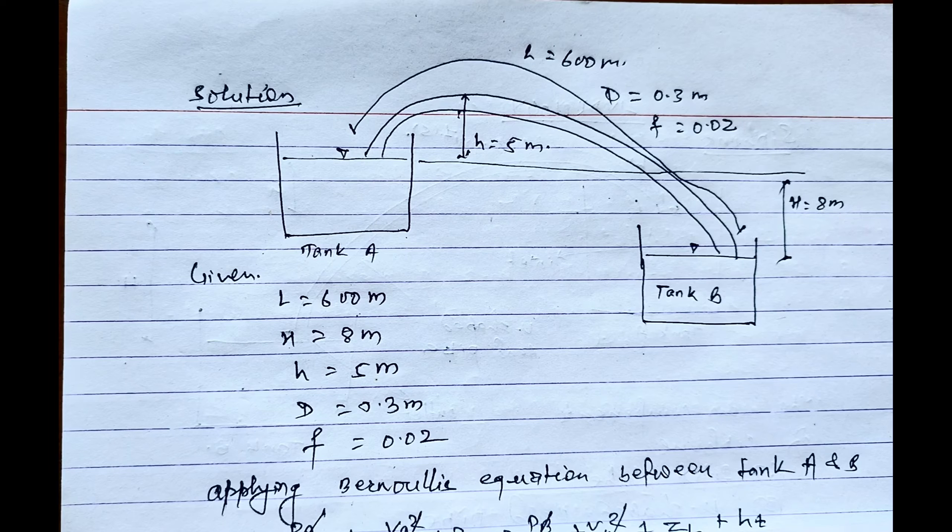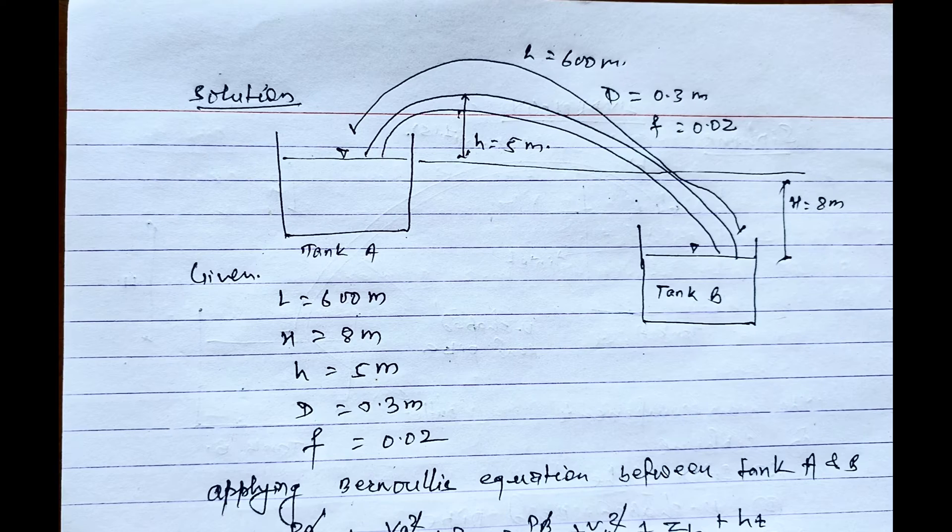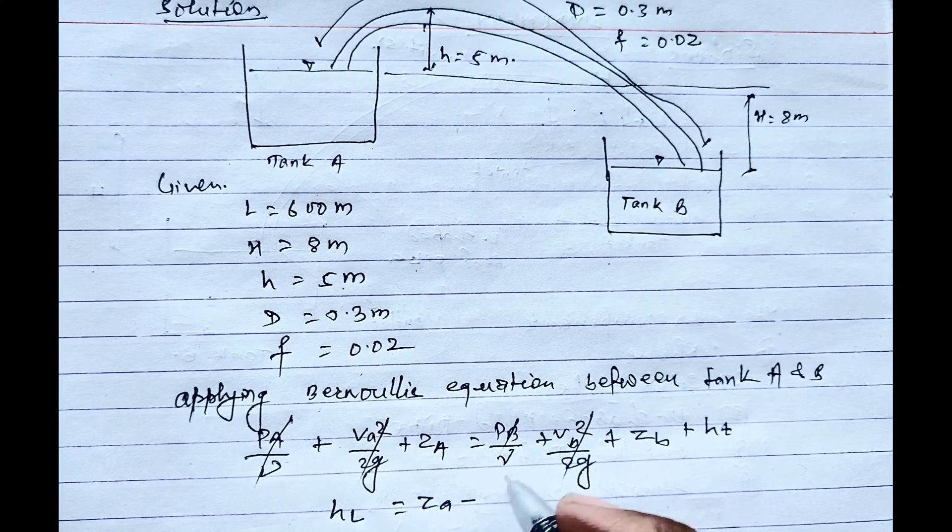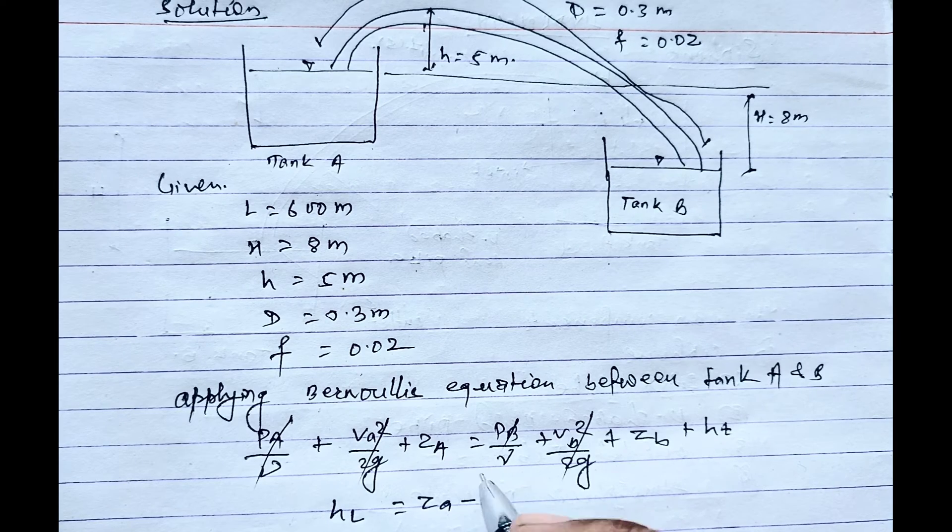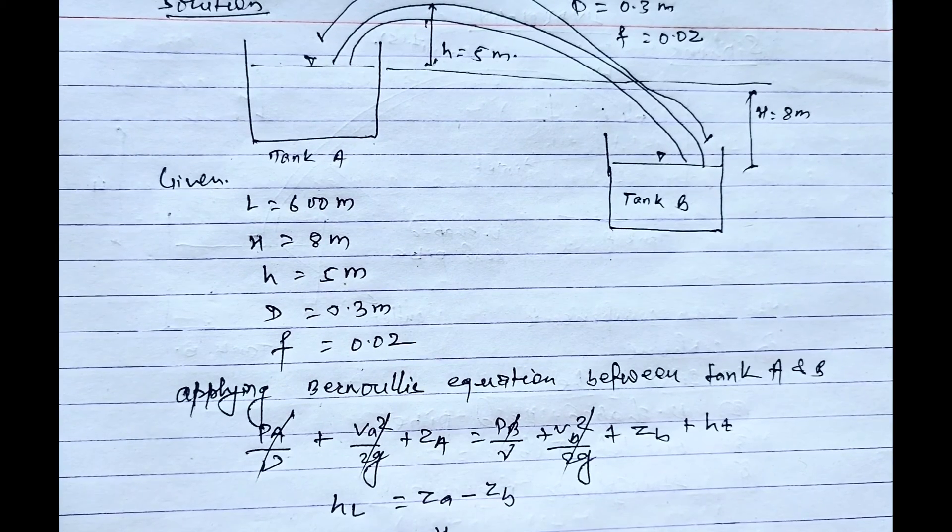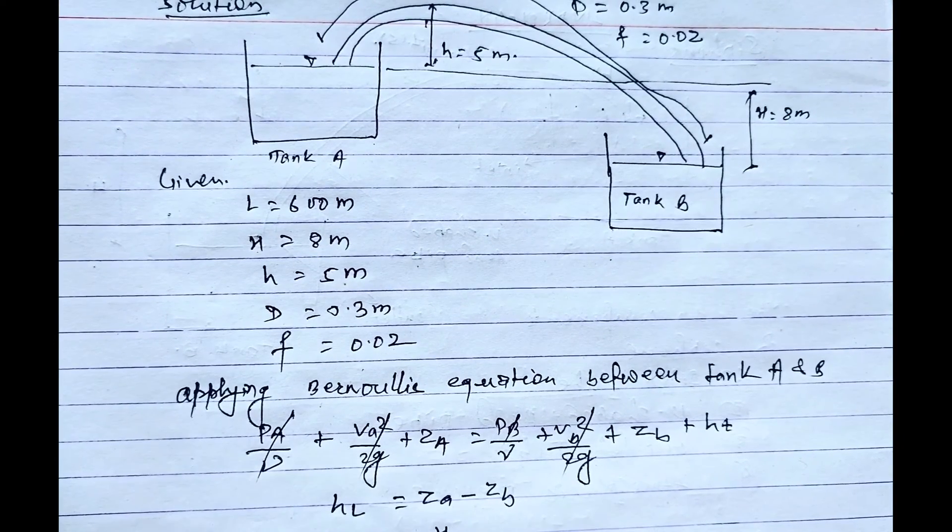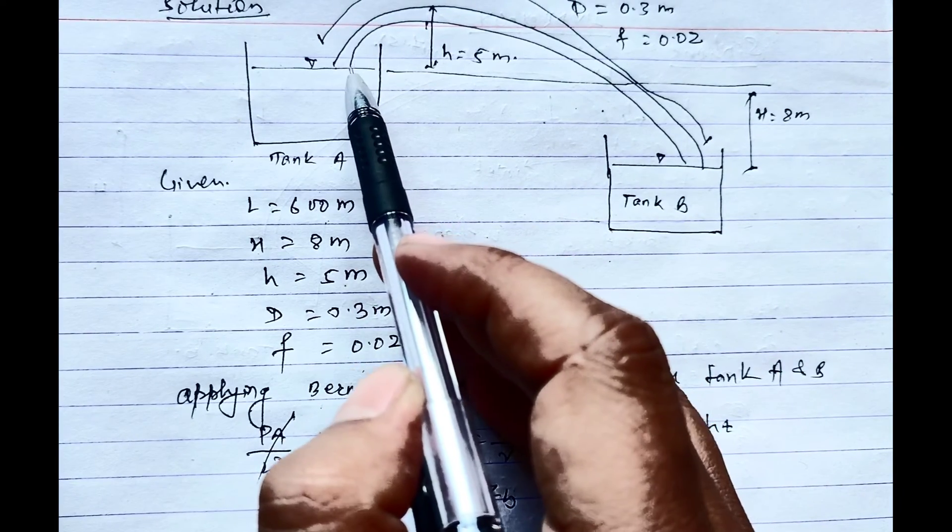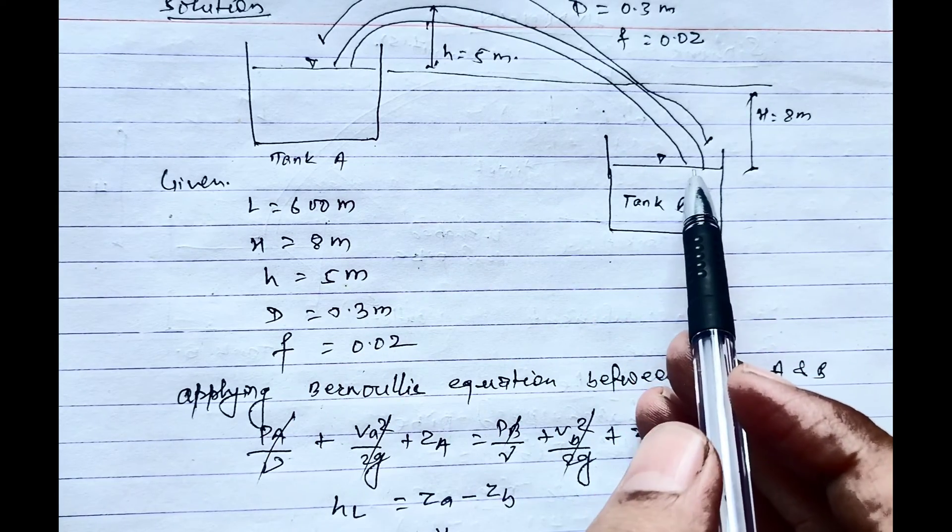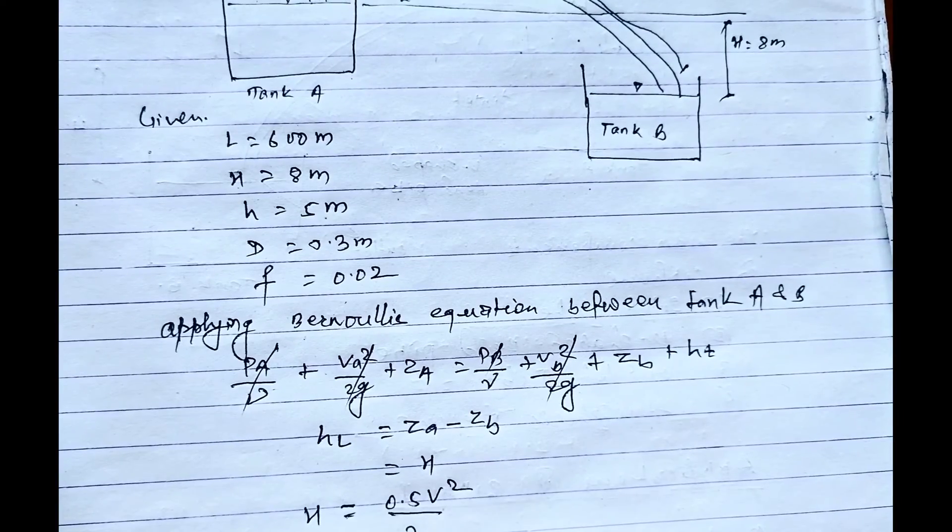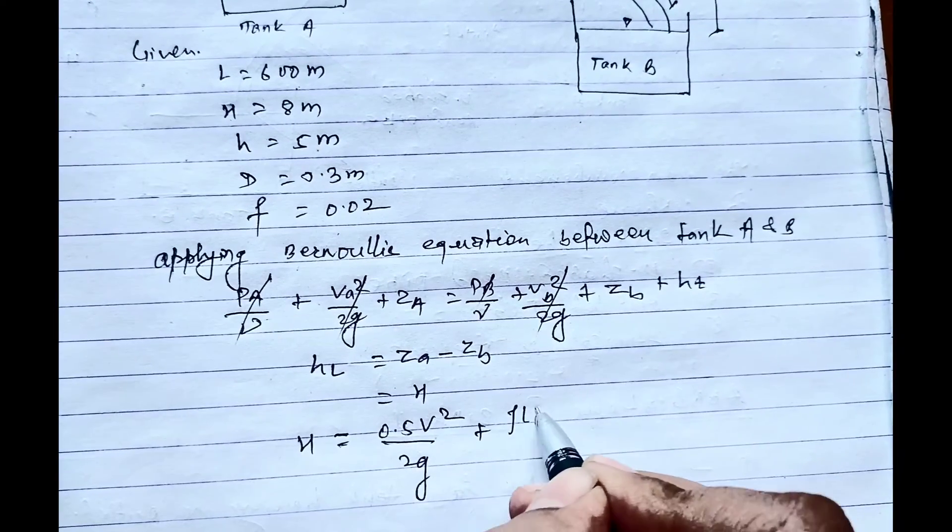And Va and Vb are equal, so those two are neglected with each other. And from the remaining condition, HL equals head loss equals Za minus Zb, which is called H. So H equals head loss at the entry plus head loss due to friction plus head loss at the outlet. So 0.5 V²/2g plus fLV²/2gd plus V²/2g.